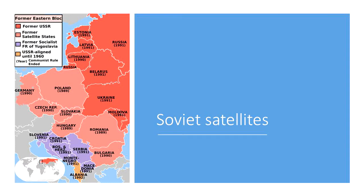However, Stalin moved quickly and organized its troops, militarily occupying Eastern Europe and imposing compliant governments that would buffer against the threat of Western European aggression. These countries were later known as Soviet satellites — nations whose politics and economics were modeled on and dictated by the Soviet Union.